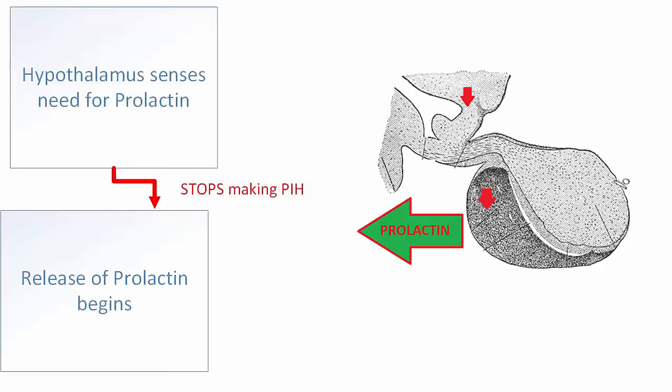If the hypothalamus senses the need for prolactin, it simply stops making prolactin inhibitory hormone, and once it does that, prolactin is released.